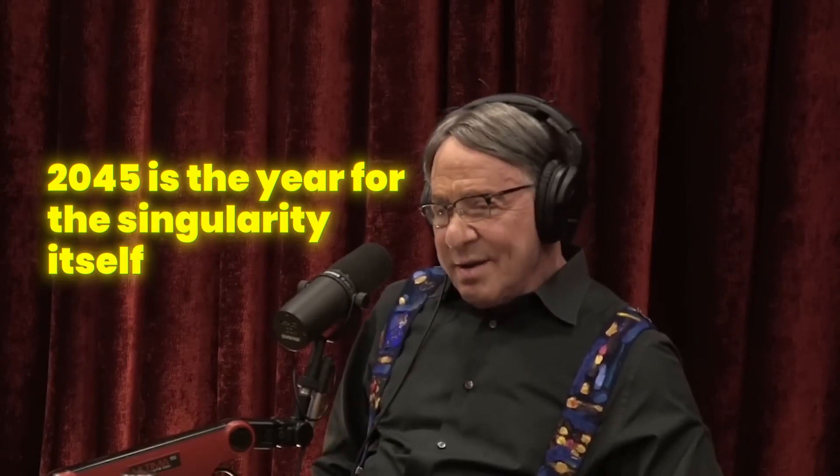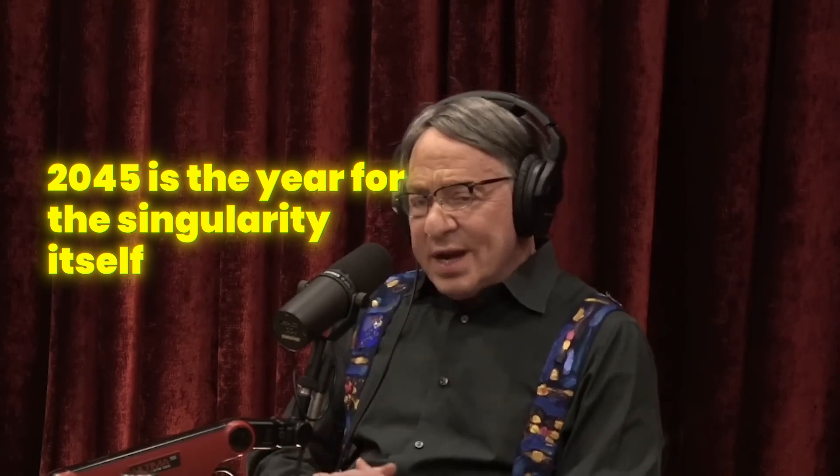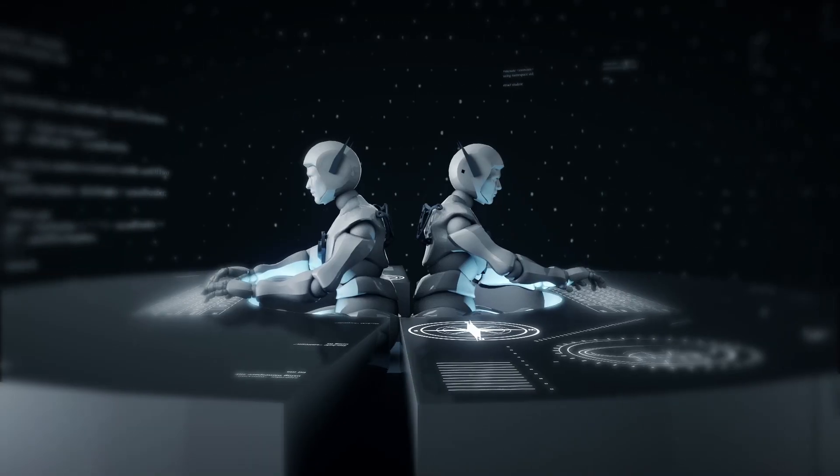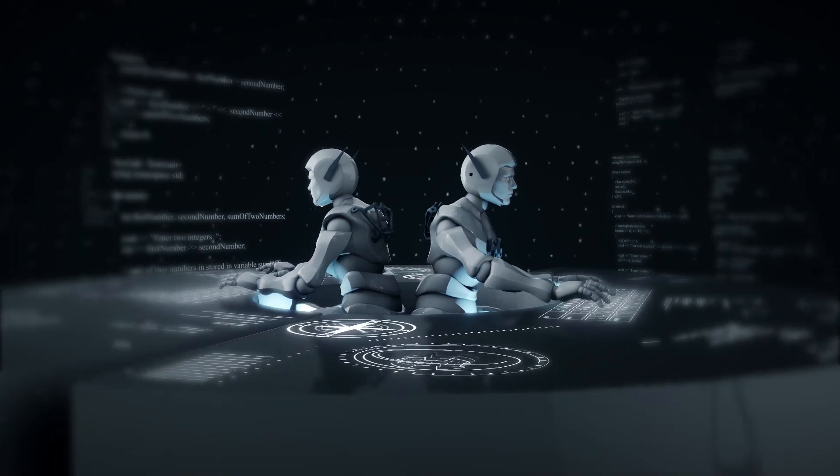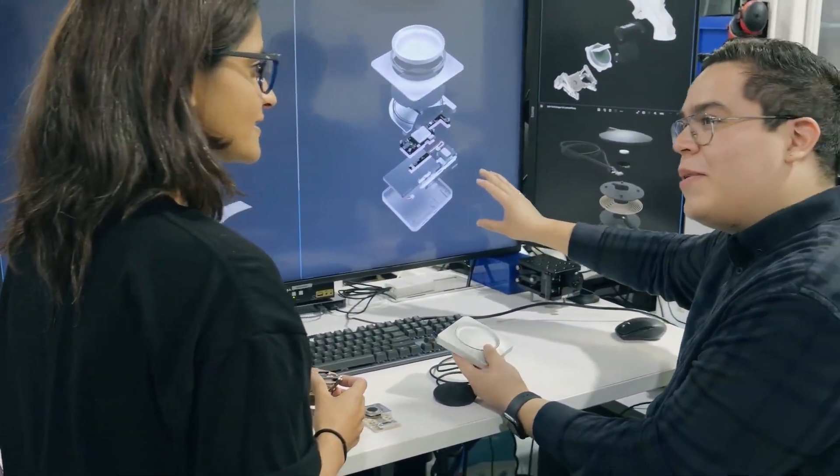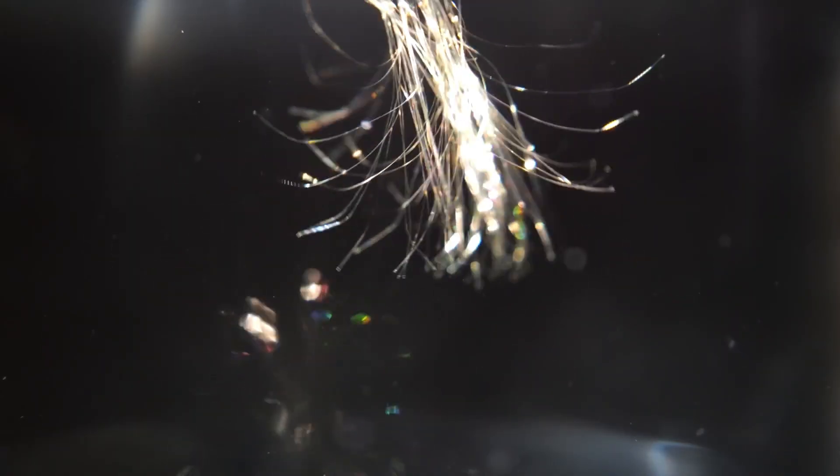But Kurzweil doesn't stop there. He predicts 2045 as the year for the singularity itself, the point where human and machine intelligence merge, boosting our overall intelligence by a staggering billion-fold. Here's how he sees it playing out. By 2029, computers will be as smart as us, and then things get really interesting. We'll start merging with this AI, potentially putting it directly in our brains and connecting to a vast cloud intelligence. This wouldn't be some far-off sci-fi dream. Kurzweil believes it's already happening in bits and pieces, and it's only going to pick up speed.